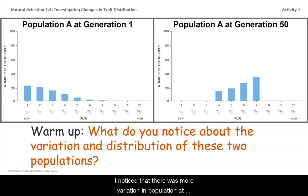I noticed that there was more variation in population A at generation one. It went from fur level one all the way to seven, whereas there is less variation at generation 50 because there's only four, five, six, and seven. What else did you notice?